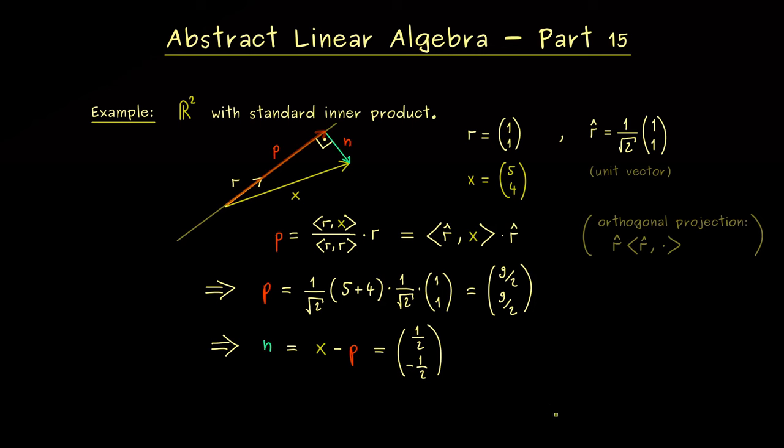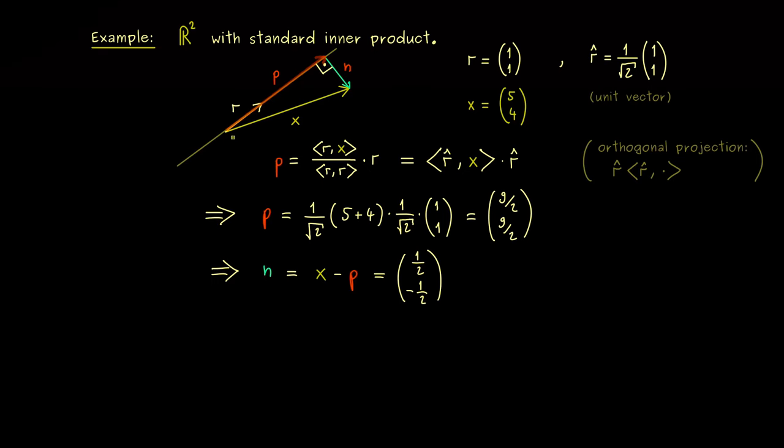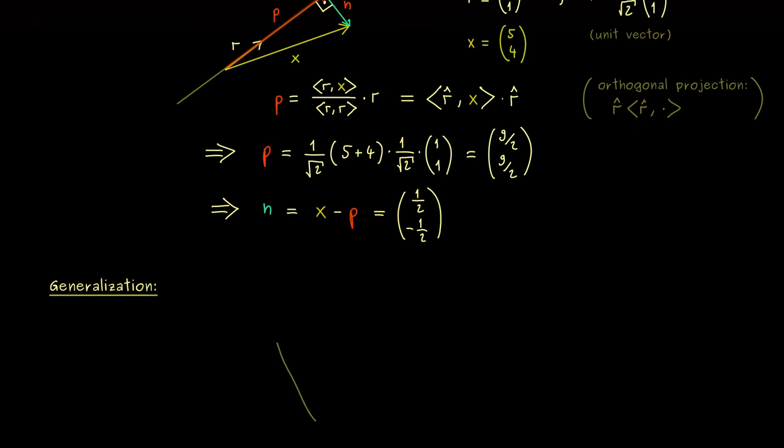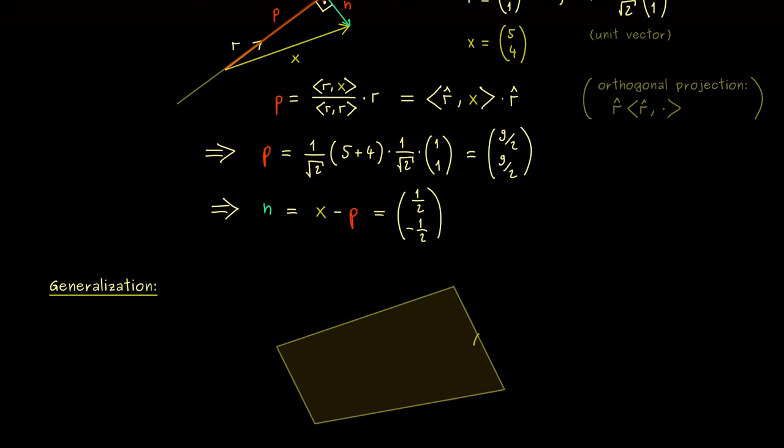Therefore the natural question is, can we generalize the whole thing to a higher dimensional subspace? So what is the best idea to get such a generalization? Maybe let's first sketch such a subspace in two dimensions. So instead of a line now we have a subspace U here. Maybe let's say it's a plane in R³.